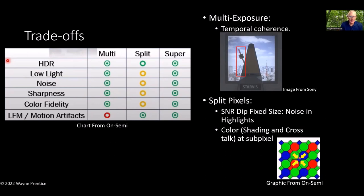In short, multiple integration times can give you temporal artifacts, and split pixels give you the compromise of having little pixels next to big pixels. The super pixel approach from ON Semi found some way of intermixing short and long exposures that apparently reduces those artifacts. There are pros and cons of the different methods.